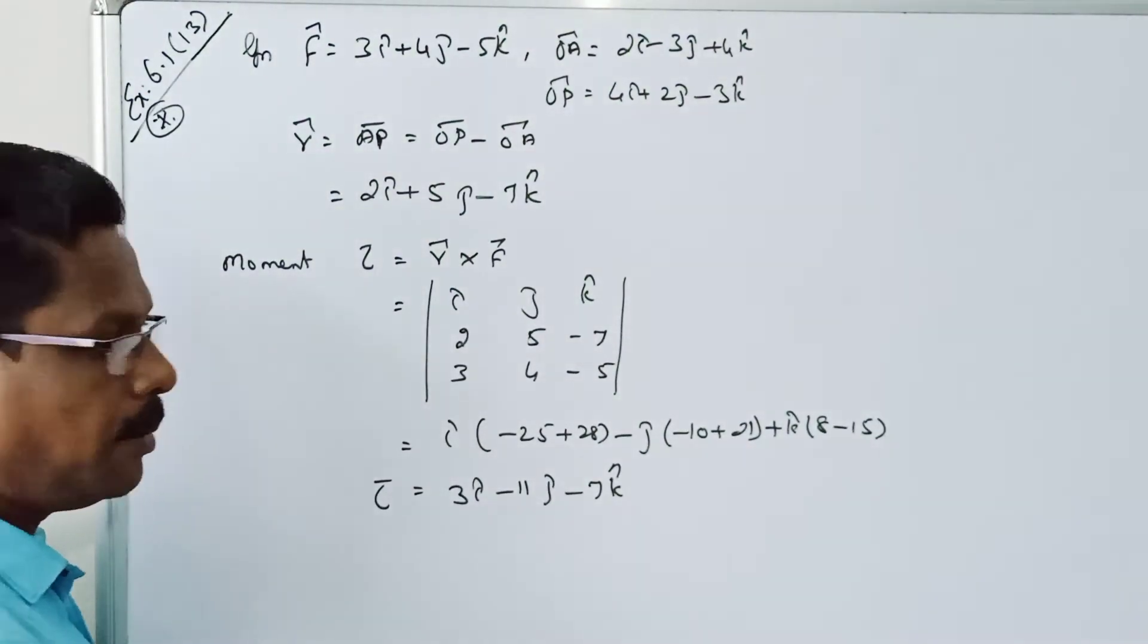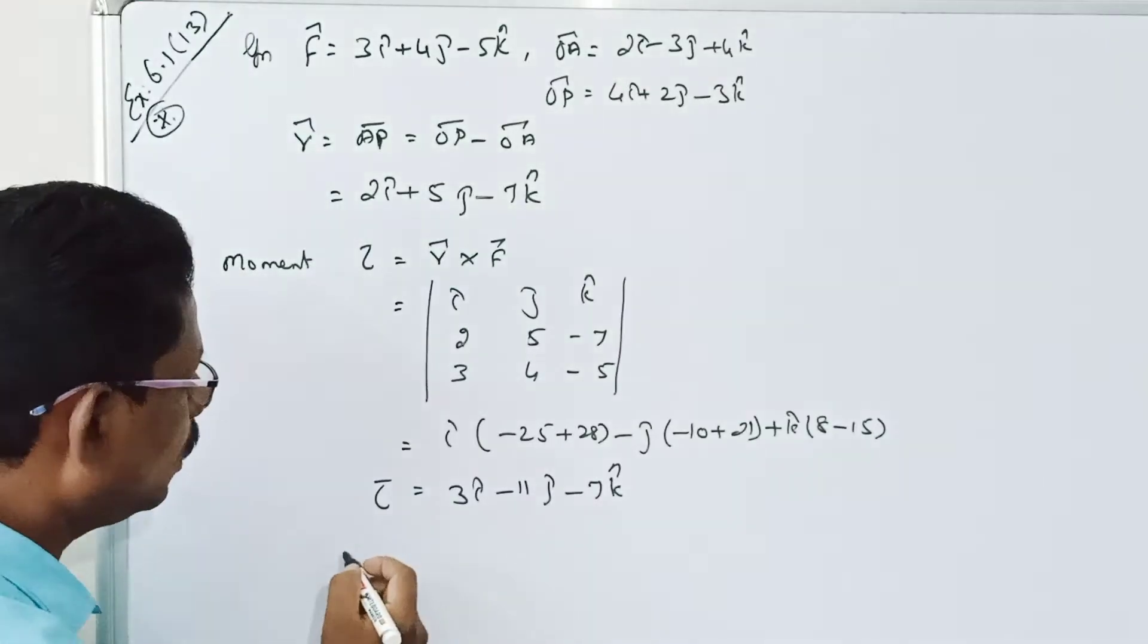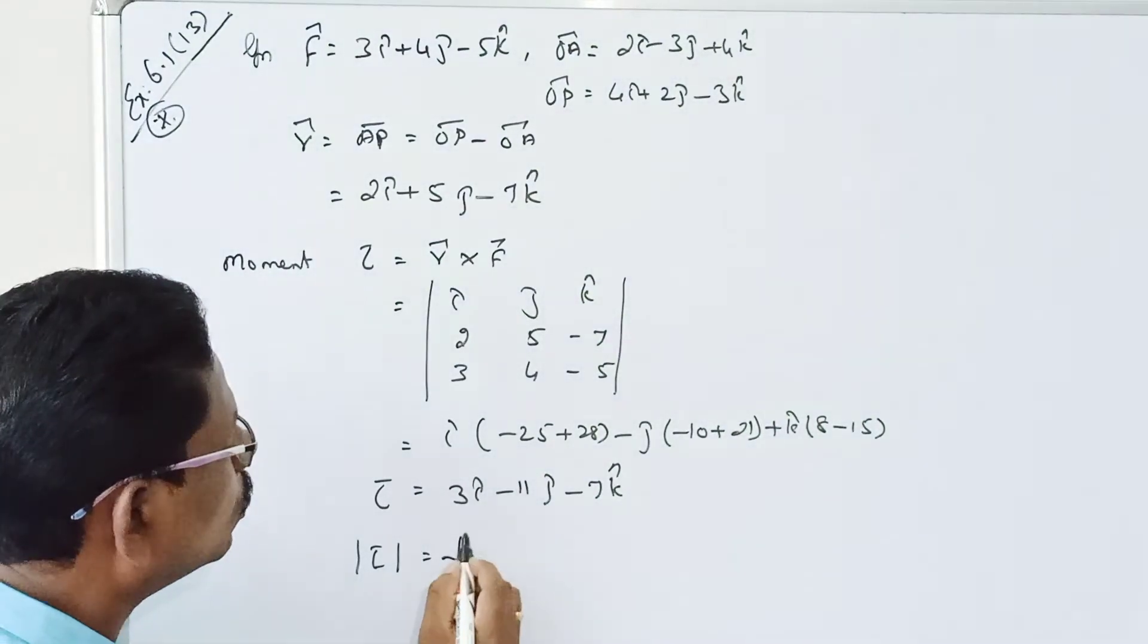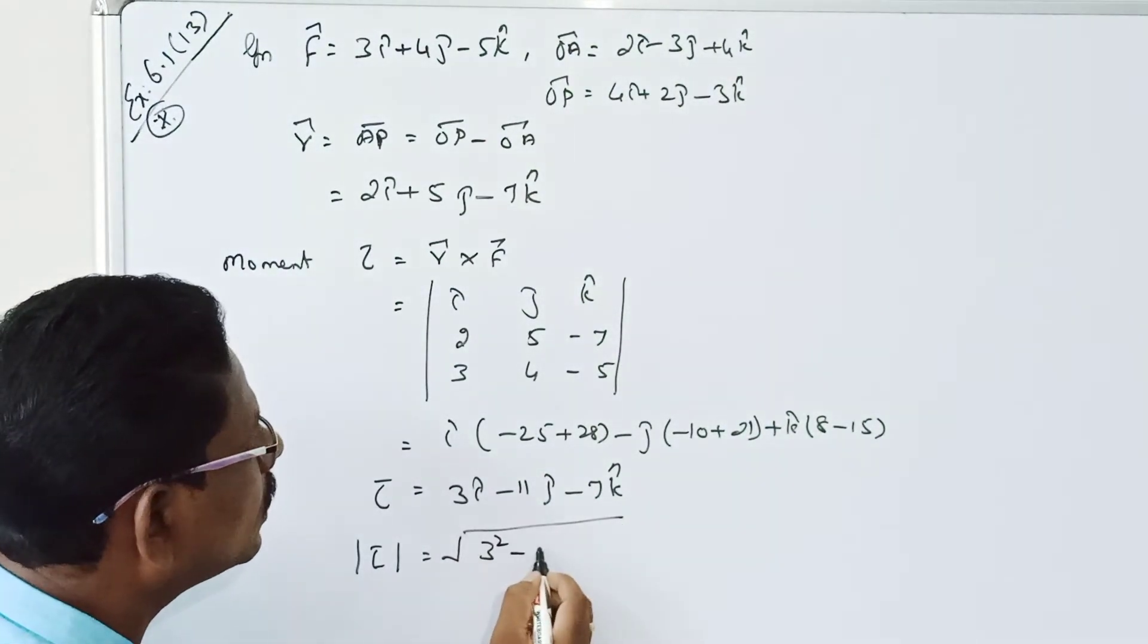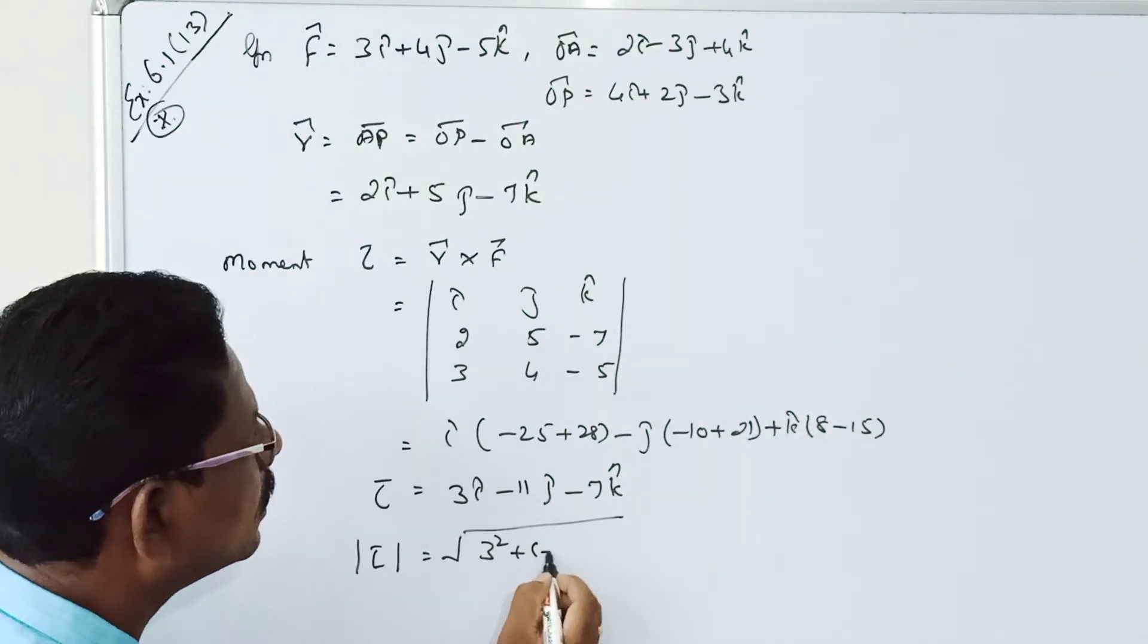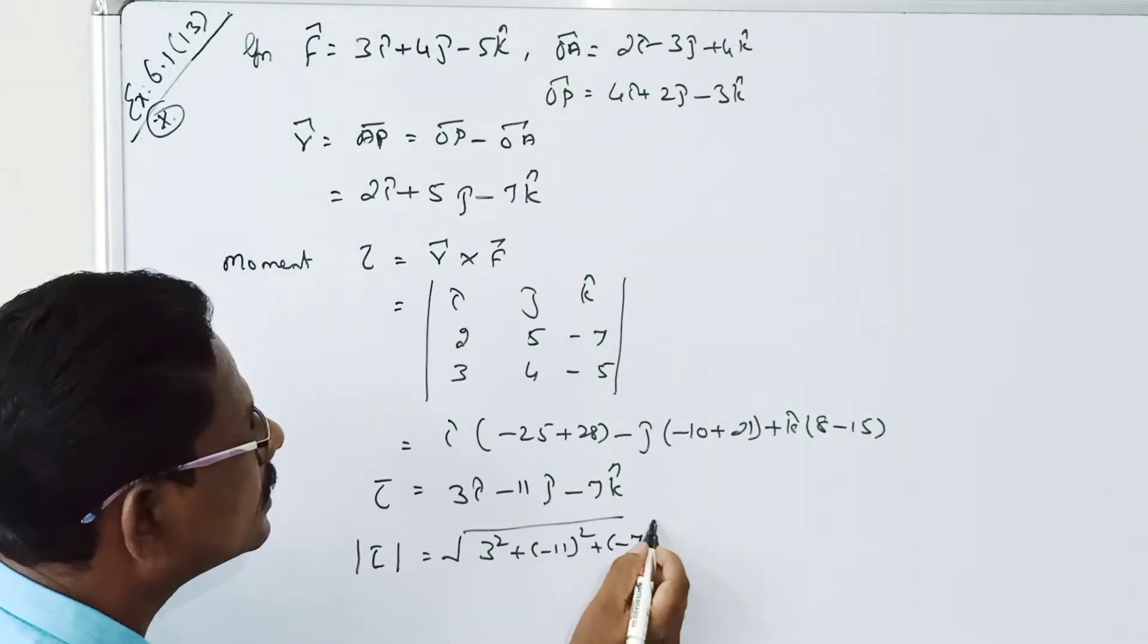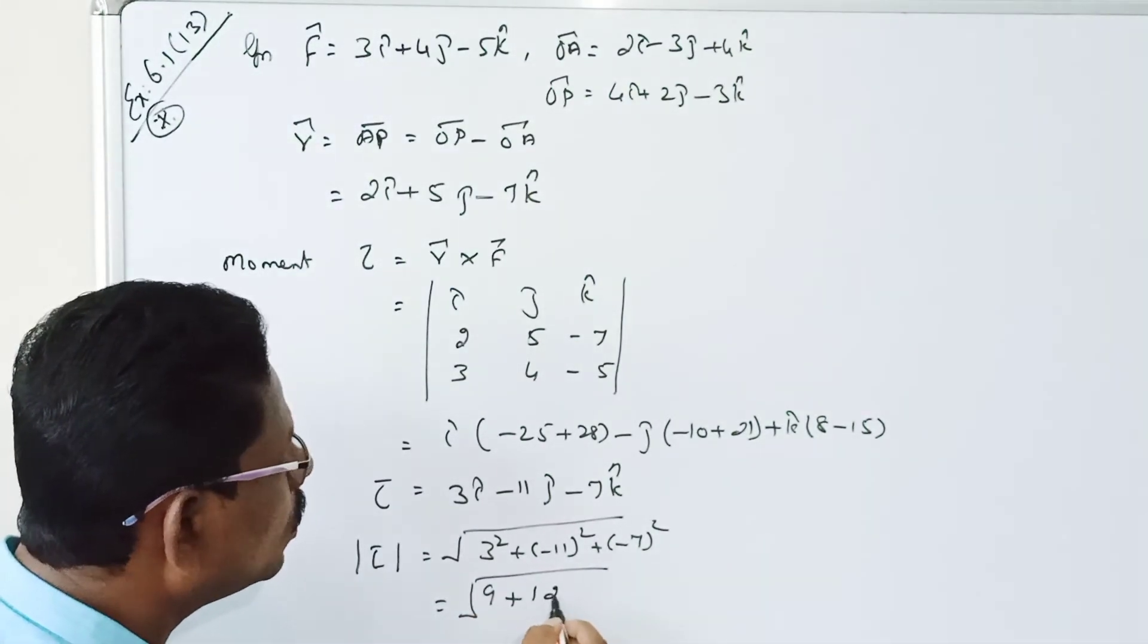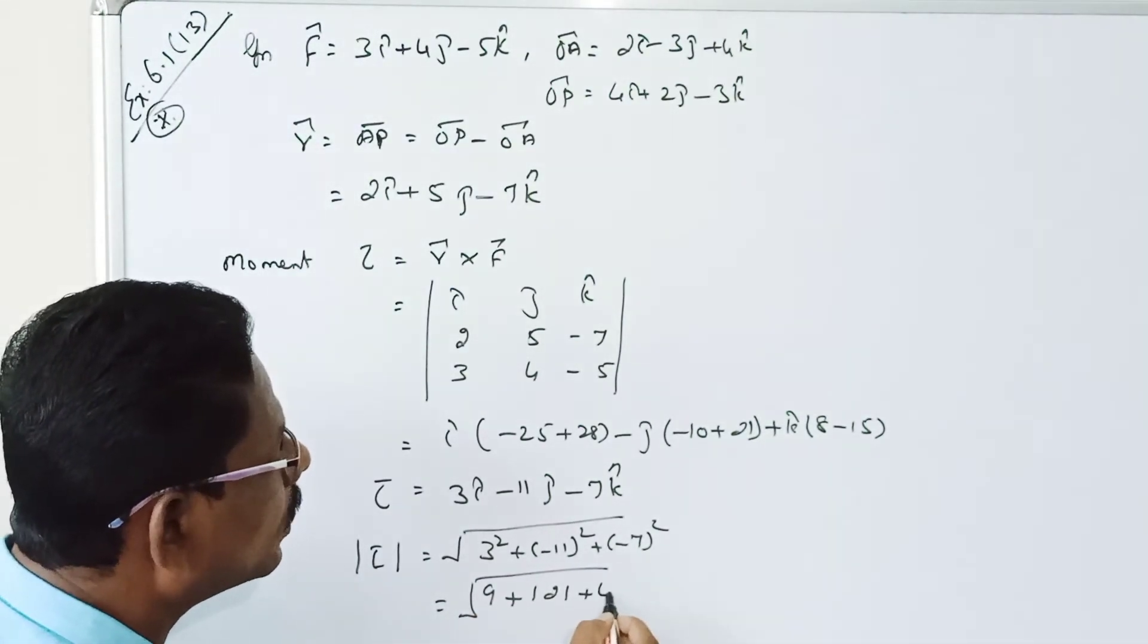Then magnitude. Modulus of torque equal to square root of 3 squared plus minus 11 squared plus minus 7 squared. Square root of 9 plus 121 plus 49.